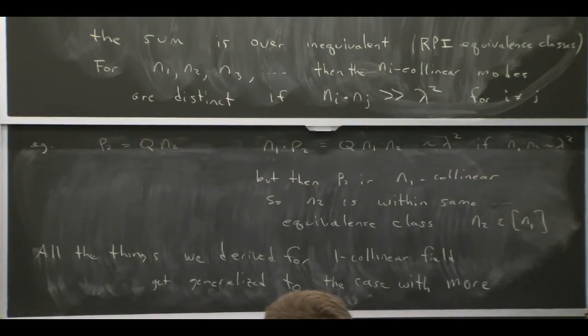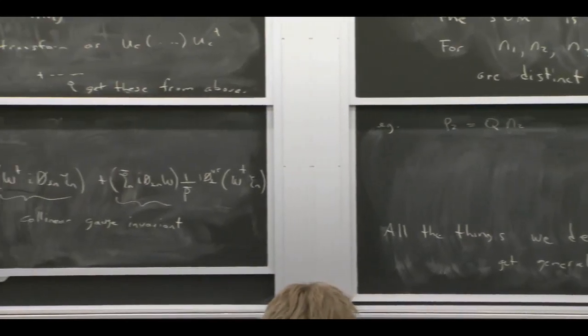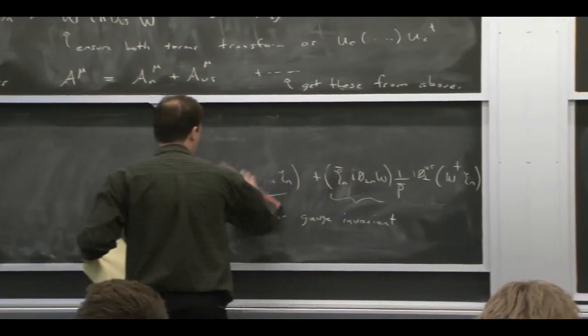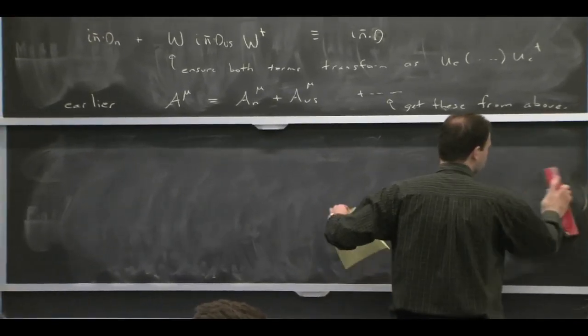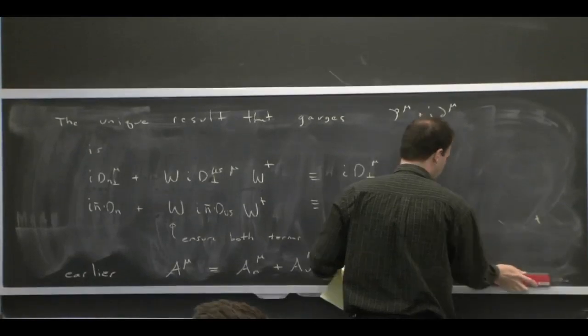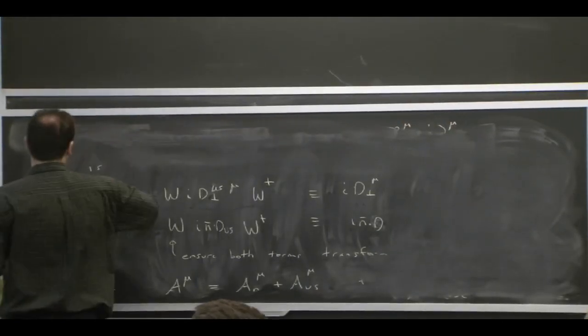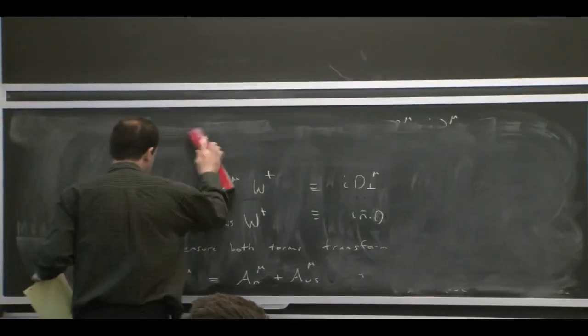So collinear gauge transformations, for example, you would have now a new type of scaling that you can have for different fields. And you could have two different types of collinear gauge transformations, one for your n1 collinear fields, one for your n2. So if n1 and n2 are distinct, then those will have distinct scalings for the corresponding momenta. So there'll be distinct transformations.